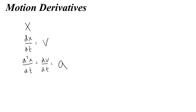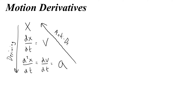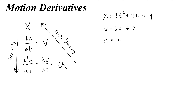As we go from position to velocity to acceleration, we are deriving. And antideriving is simply going backwards — starting from acceleration, getting velocity, or getting position. So if x equals 3t squared plus 2t plus 4, then the derivative gives us velocity as 6t plus 2, and the acceleration would be 6. That's the deriving process.